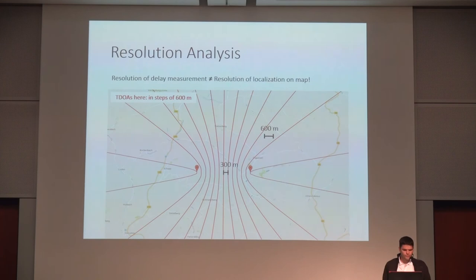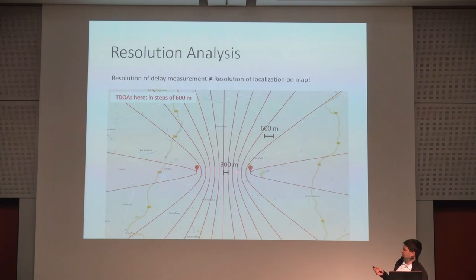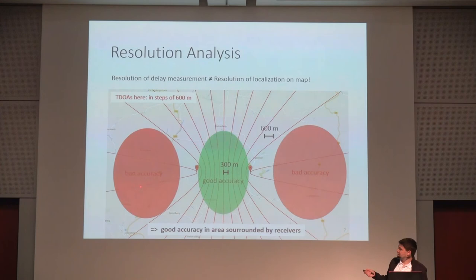Here is a resolution analysis for localization on a map. The delay measurement resolution is not equal to the resolution on a map. I've assumed a possible resolution of 600 meters, so the distance between every hyperbola is the TDOA equivalent of 600 meters. Right between the receivers the accuracy is even higher — around 300 meters. But if you move outside the area between the receivers, you get a very bad resolution of maybe even a few kilometers. This is a general rule with TDOA: you always get good accuracy in the area surrounded by the receivers, and accuracy degrades badly if you are behind a receiver.